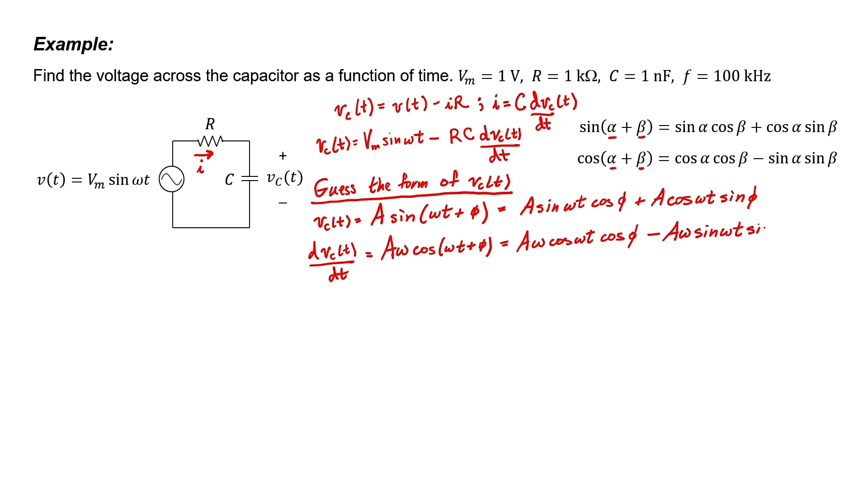Let's take these two expressions and substitute them into my differential equation. I'm going to divide every term in this equation by cosine of omega t. This means that this term, this term, and this term will end up being tangent of omega t.